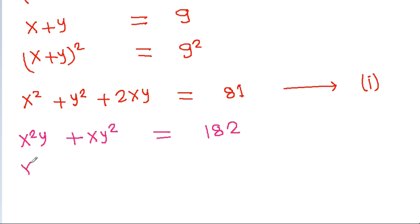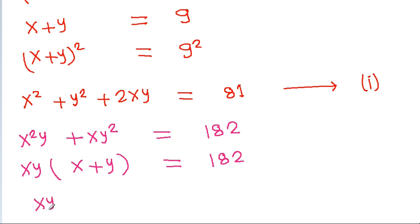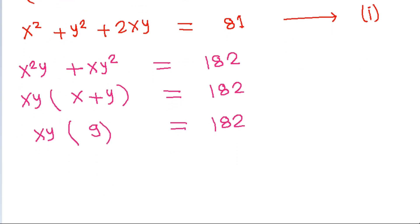If we take xy common from x squared y plus xy squared, we get xy times x plus y equal to 182. Since x plus y is equal to 9, we get xy is equal to 182 by 9. Suppose this is equation 2.